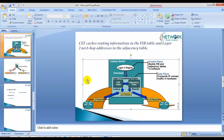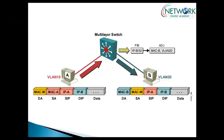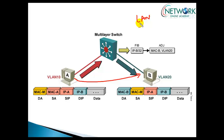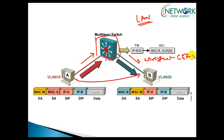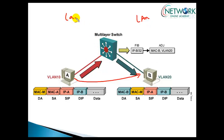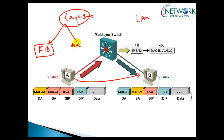When CEF is enabled, fast switching happens automatically. The same process applies to Layer 3 switches — there is no significant difference. For example, if a source IP wants to send a packet between two different VLANs — VLAN 10 to VLAN 20 — CEF is very useful in Layer 2 network environments where traffic needs to be forwarded between VLANs at wire speed. The switch maintains Layer 3 software information in the control plane, which is forwarded to the hardware as a FIB table and adjacency table, enabling fast forwarding to the destination interface.